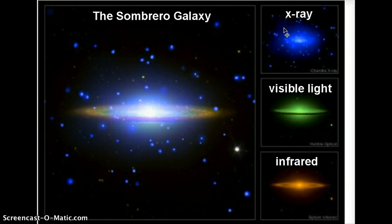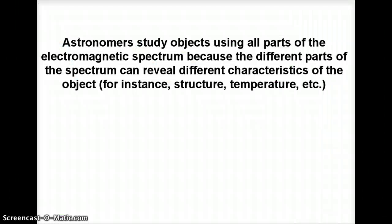So you don't see that dark lane at all in the x-rays, so there's got to be something different going on that's making x-rays versus what's making the infrared, because we're seeing totally different structures. And visible must be someplace in the middle. So by looking at all these different parts of the electromagnetic spectrum, we can find out different characteristics of the object. We saw totally different structures.